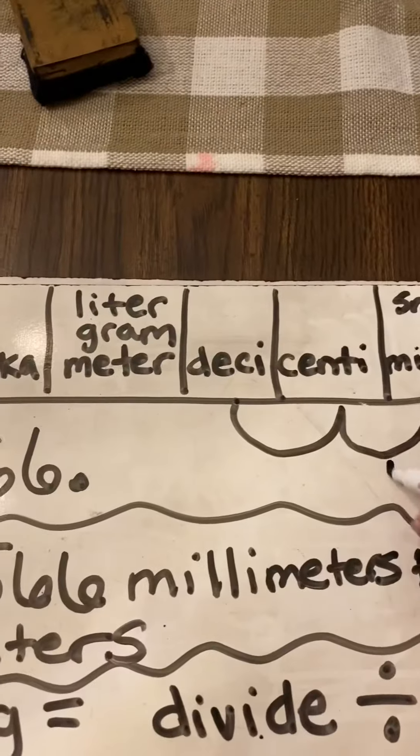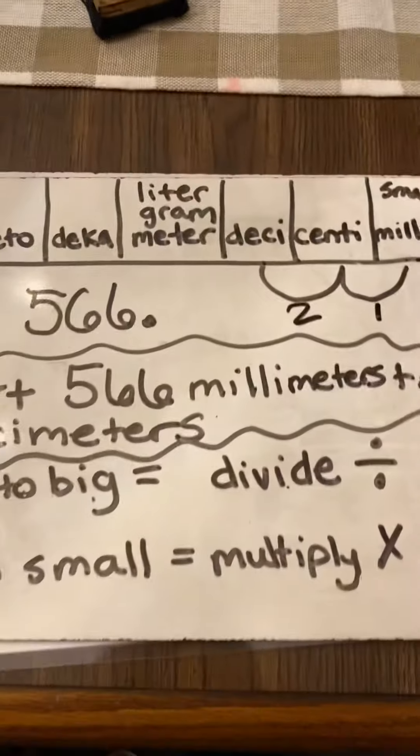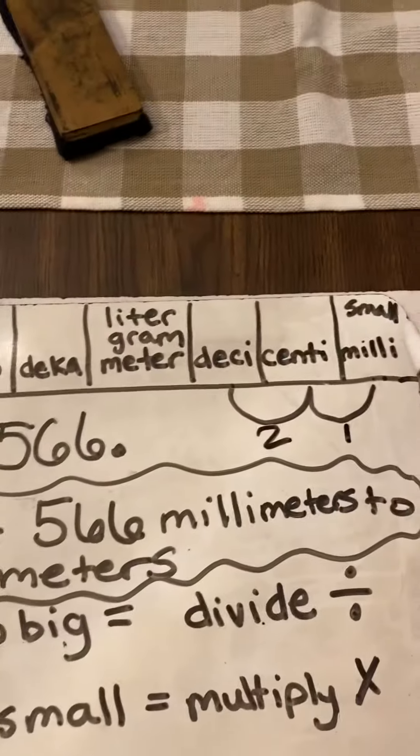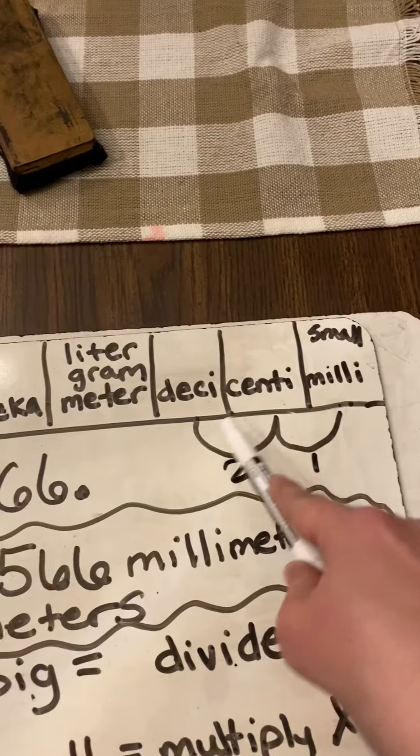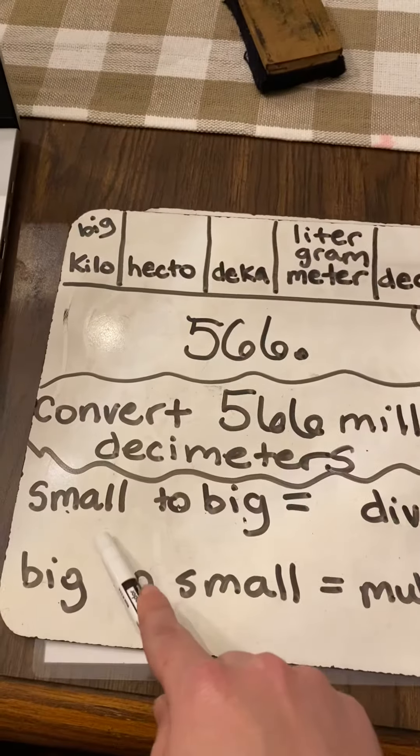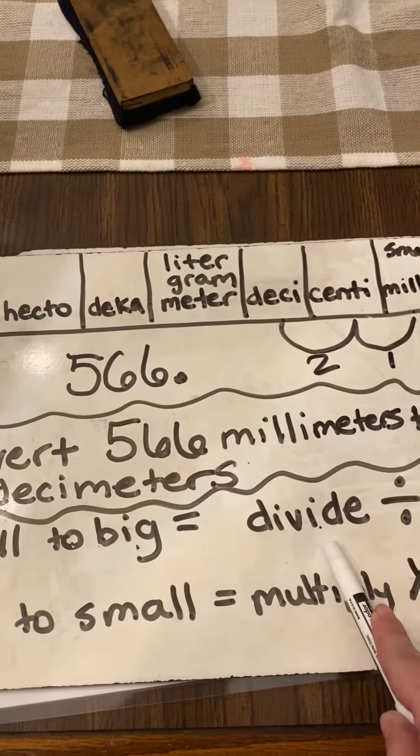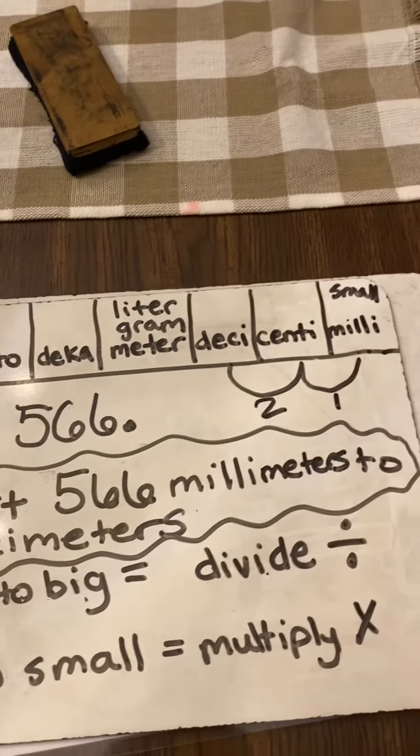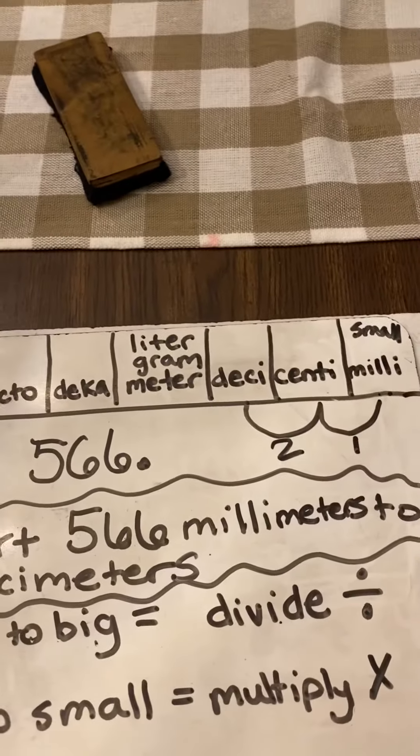So, that is 1, 2 powers of 10. And we are going from small to bigger units of measurement. So, small to big means we divide by 2 powers of 10, which would be 100.